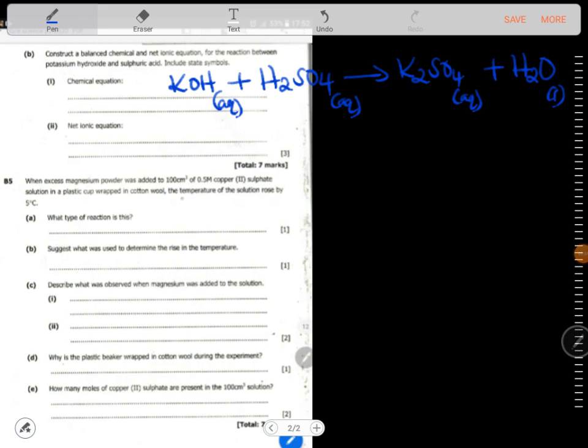Question B says construct a balanced chemical and net ionic equation for the reaction between potassium hydroxide and sulfuric acid, including state symbols. You need to know how to write chemical symbols. Potassium hydroxide has got this symbol, while sulfuric acid has got this symbol. This is an already written equation. State symbols: this is aqueous, aqueous. Now this is a neutralization reaction, that you must know. Therefore, is this equation balanced?